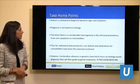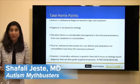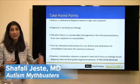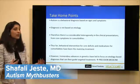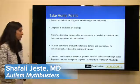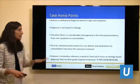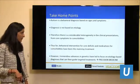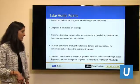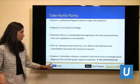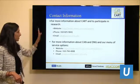Some take-home points: autism is a behavioral diagnosis based on signs and symptoms, not a blood test or cause. There is considerable heterogeneity in presentation, which makes it challenging for clinicians and parents. Thus far, behavioral intervention for core deficits and medications for comorbidities have been the mainstay of treatment. However, tremendous advances in genetics have led to a focus on etiology-based diagnosis, which we hope will guide targeted treatments — what we call precision medicine.